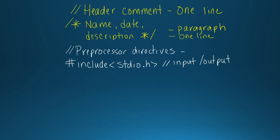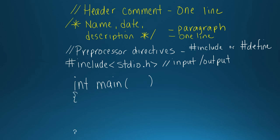Pre-processor directives usually start with `#include` or `#define`. The next thing that's going to be in every program is a main function. Each program will have a main function, and it looks like this: it's `int main` with a block of code, an opening curly brace, a closing curly brace, and the ending statement will be `return 0;` — the word return, the number zero, and a semicolon.